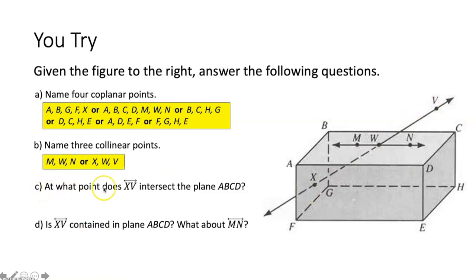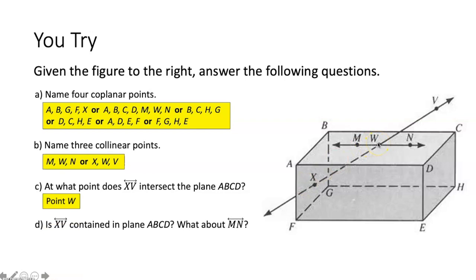Part C: at what point does line XV intersect plane ABCD? Plane ABCD is the top of the box. Line XV intersects the top of the box at point W — you can tell by the dashes that the line goes inside the box there, and exits at point X. So point W would be the answer.